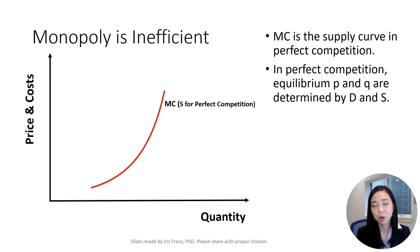Now let's talk about why monopoly is inefficient. Remember that in perfect competition, marginal cost curve is the supply curve. If the market were perfectly competitive, then the market price and quantity will be determined by market demand and market supply. The equilibrium price is PC and equilibrium quantity is QC.